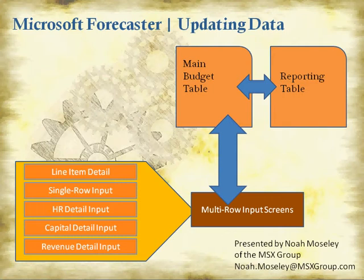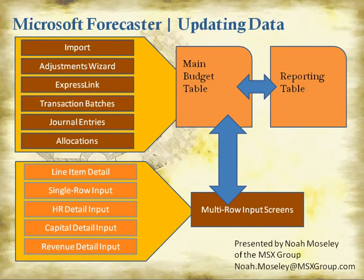All five of these manipulate or alter the data in the multi-row input screens. There are also a lot of other options for getting data into Forecaster or manipulating data inside Forecaster. You've got options for importing data, adjustments wizard, express link, transaction batches, journal entries, and allocations.